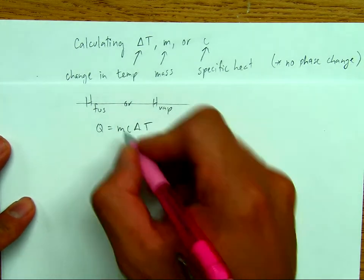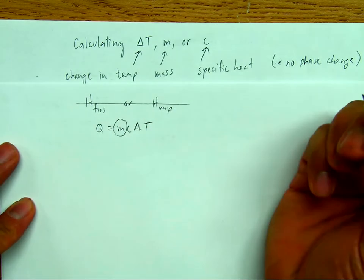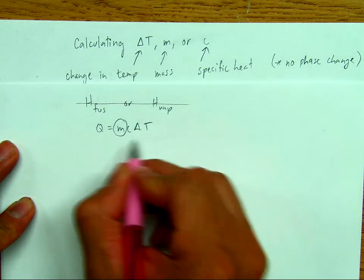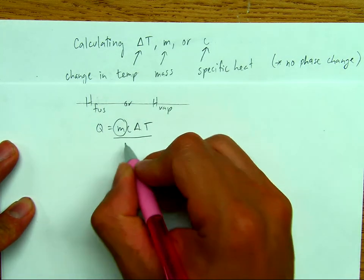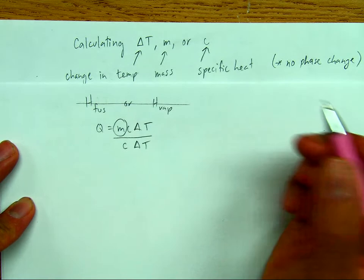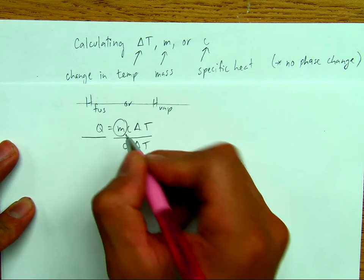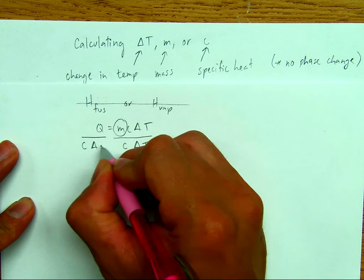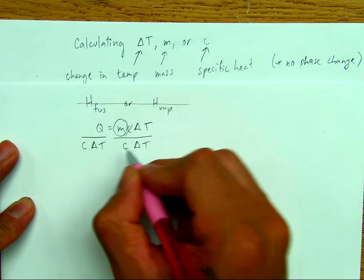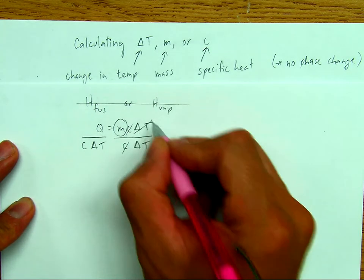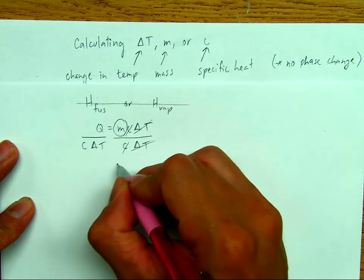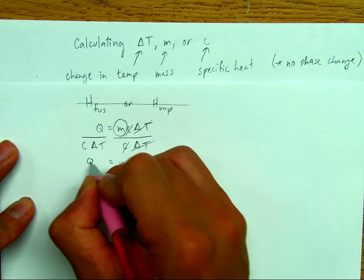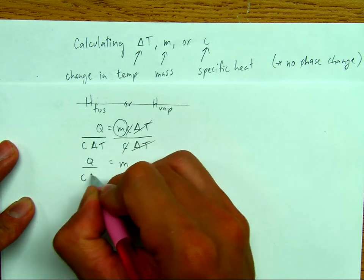So first, let's say we're trying to isolate for m. So use your math. If we're trying to isolate for m, we'll divide both sides by c and delta t so that we can get m by itself. So divide both sides by c and delta t. Now your c's and delta t's will cancel. And you're left with m equals q over c and delta t.